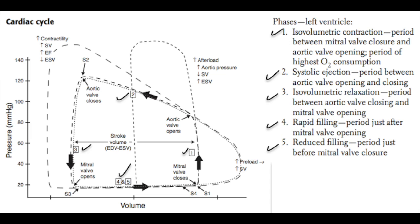After phase four comes phase five, also known as reduced filling or diastasis, which is the period just before mitral valve closure. From these diagrams, you can calculate stroke volume by taking the end diastolic volume — during phase one — and subtracting the end systolic volume, which is phase three. By increasing preload and shifting phase one to the right, you increase stroke volume. This is the Frank-Starling mechanism: by increasing preload, such as by giving blood volume, the heart will naturally have an increase in stroke volume due to the elastic properties of the myocardium.